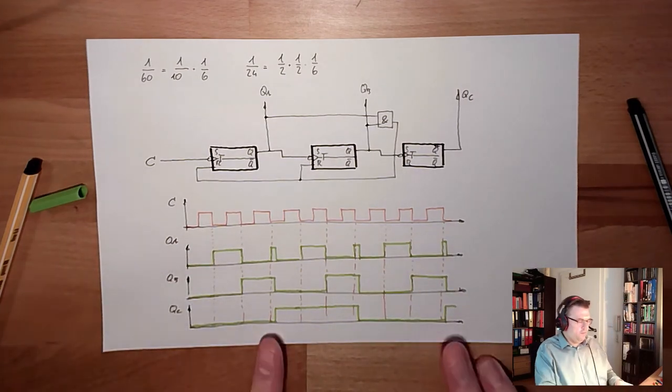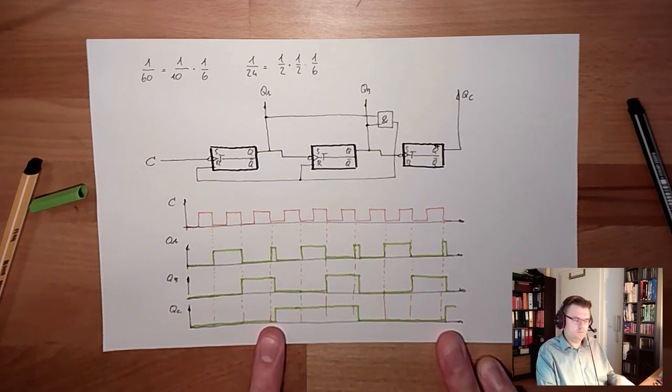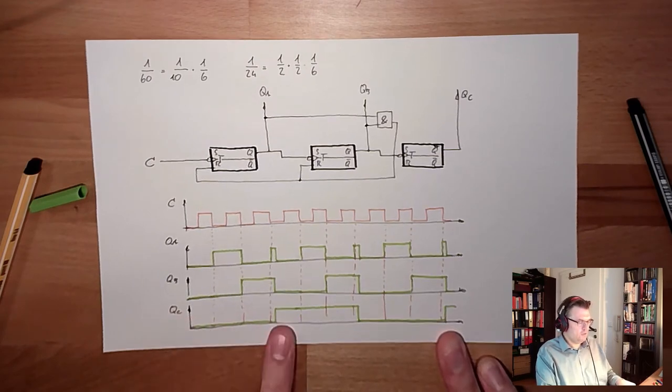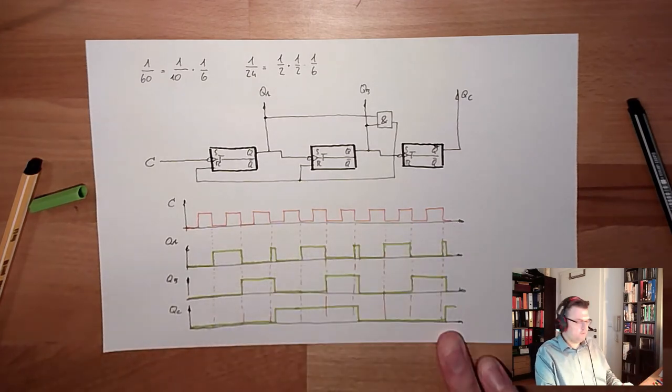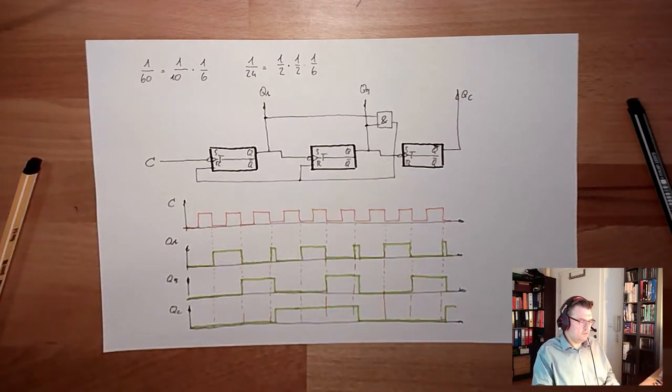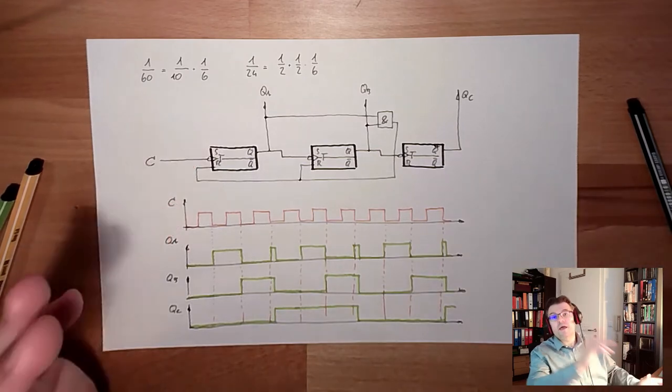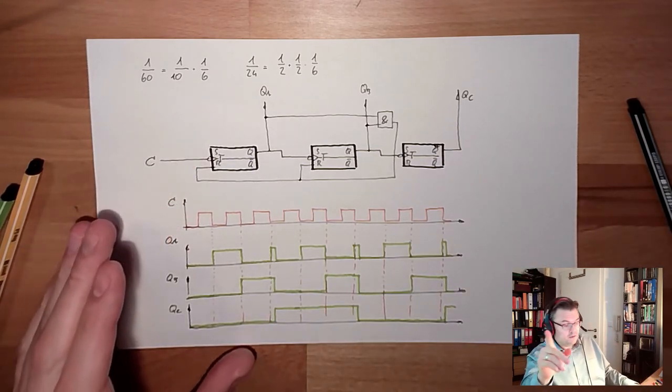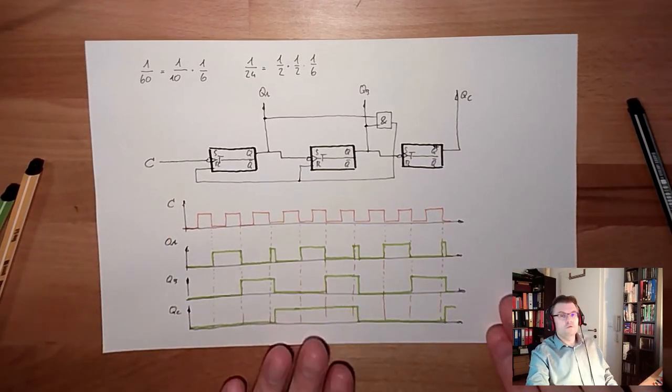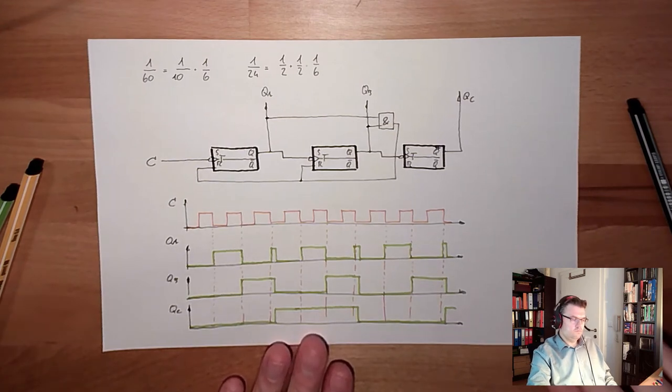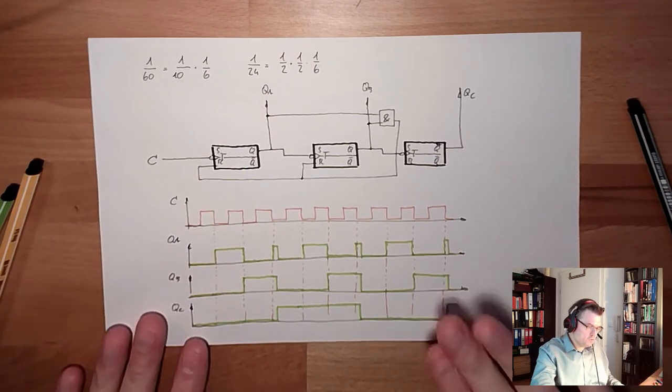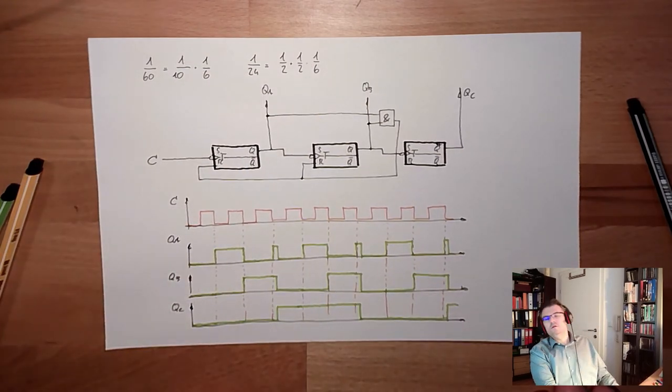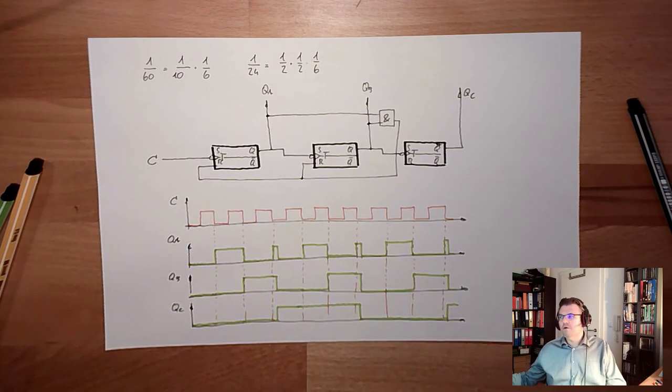Now, this is one period. This is one period of QC, and this takes one, two, three, four, five, six periods of C. This is the frequency divider, asynchronous frequency divider, one to six. Exactly what we're looking for. So, yes, it is possible to use these frequency dividers.